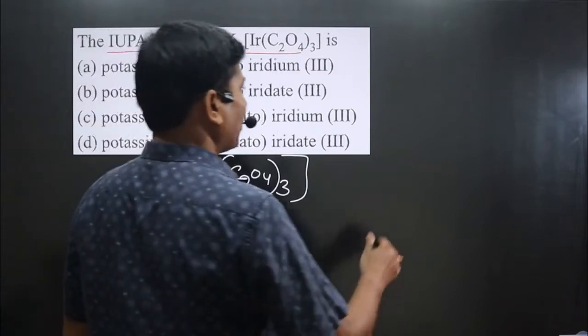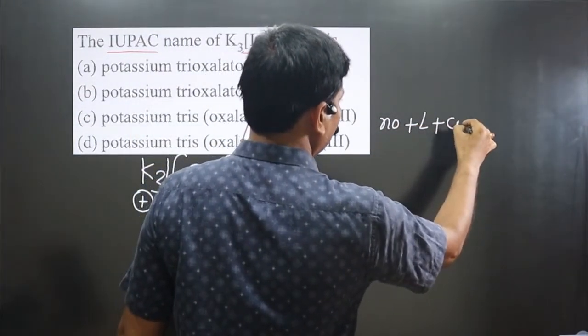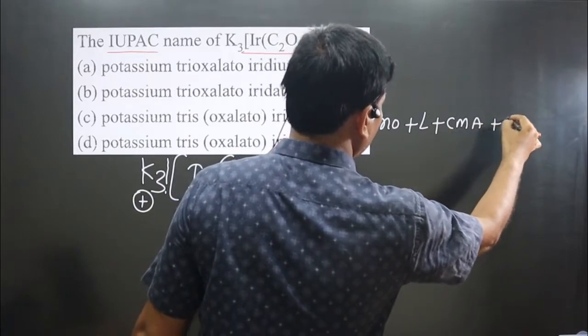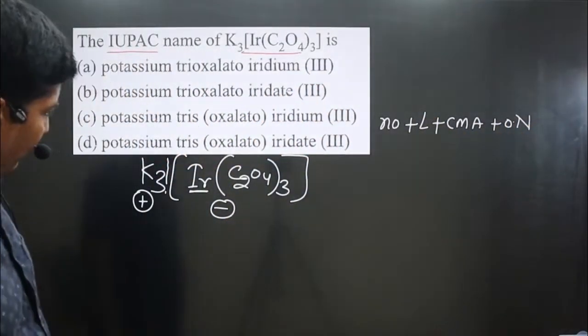Keep in mind, the order for naming the complex: we have number of ligands plus type of ligand, then central metal atom, then oxidation number of the central metal atom to be written in Roman numerals. So first cationic naming followed by anionic naming.